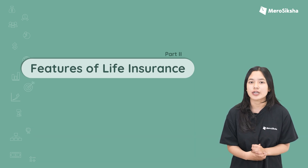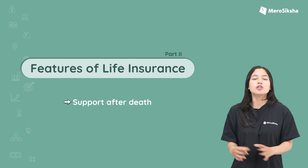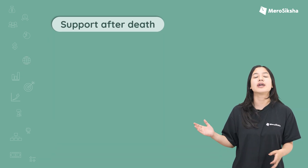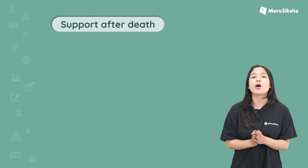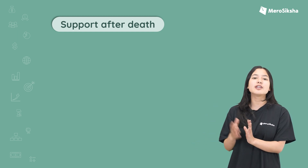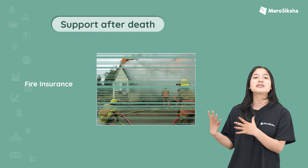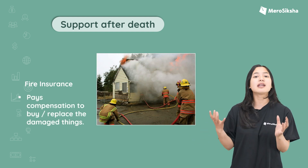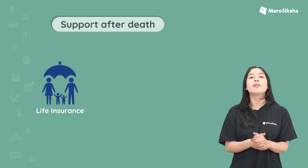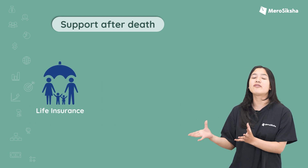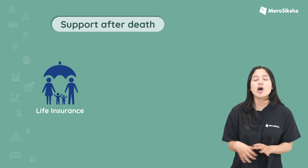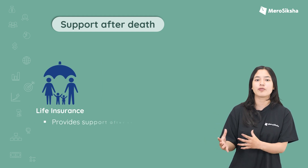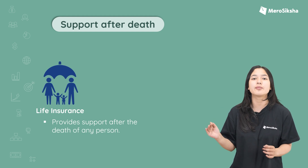The first feature is support after death. Life insurance provides support after the death of any person. Unlike factory insurance or fire insurance, with life insurance the insurance company has to pay out, and that is why life insurance provides support after the death of any person.